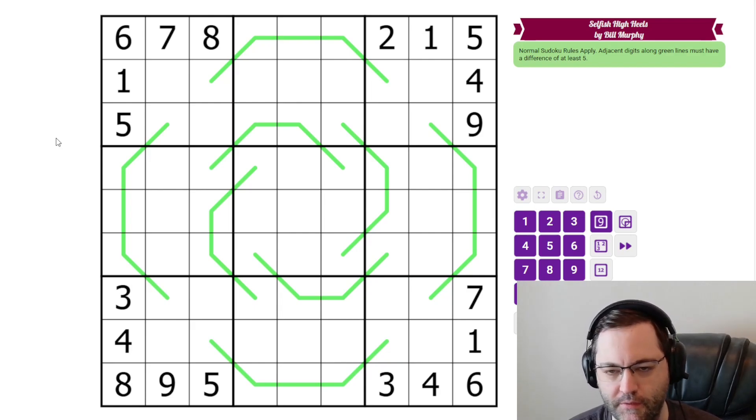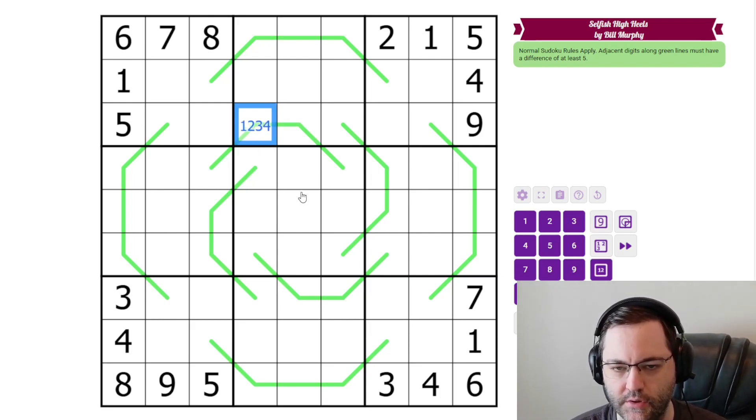It's one of my favorite things to set. But as a reminder, because digits must differ by at least five along the lines, if we have a low digit here, in order to have a difference of five we're going to have to have a high digit next to it, and vice versa.